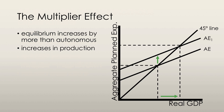The multiplier effect tells us that the equilibrium expenditure increases by more than the increase in autonomous expenditure. As production increases due to a shortage of inventories with firms, real GDP increases. But with a higher level of real GDP, induced expenditure increases. Equilibrium expenditure increases by the sum of the autonomous expenditure and the increased induced expenditure.